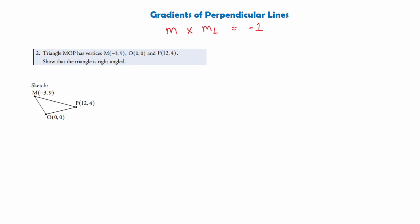In the next example, triangle MOP has vertices M(−3, 9), O(0, 0) and P(12, 4), and we are asked to show that the triangle is right-angled. Looking at a quick sketch of the triangle, we can see which two lines are probably perpendicular. Since perpendicular lines meet at a right angle, if two sides of the triangle meet at a right angle the triangle is right-angled. It looks like it's going to be lines OM and OP rather than PM and PO.